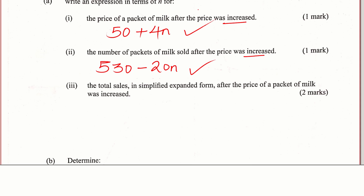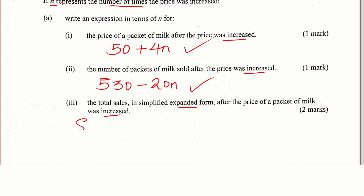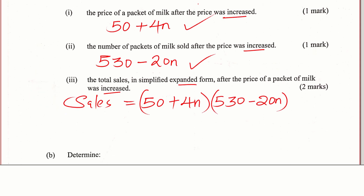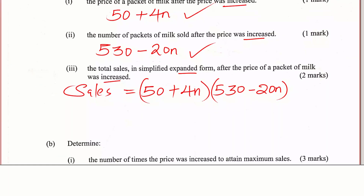Now let's go to the total sales in simplified expanded form — that is part 3. Total sales are given by the price of one packet multiplied by all the packets sold after the increase. The price of one packet after the increase is 50 + 4n (from part 1), and the number of packets sold after the increase is 530 − 20n (from part 2). When you multiply these two expressions, you get the total sales, so we just need to expand them.